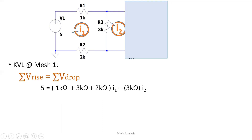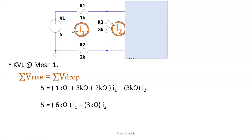The negative 3kΩ·I2 term comes from the fact that at mesh 1, current I2 also acts through the 3kΩ resistor. It is negative because the dominant current here is I1. Current I1 flows from one point to the next, while current I2 flows in the opposite direction through that resistor — it contradicts the flow of I1. Therefore, the I2 term is negative.